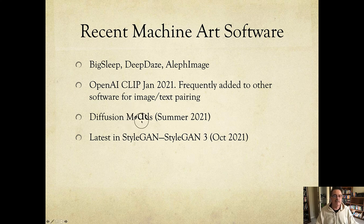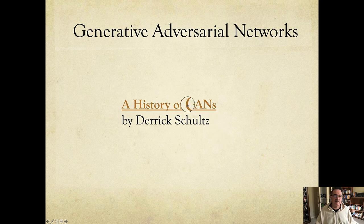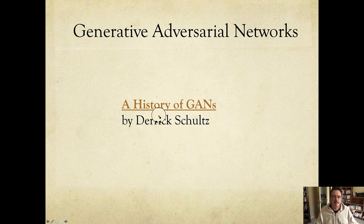Diffusion models are more recent and I really love the art that comes out of diffusion. StyleGAN3 is very new — it just came out last month. GANs are a family of different kinds of models; GAN stands for Generative Adversarial Network, where you have a generator and a discriminator as parts of the overall architecture. Derek does a great job explaining the history of GANs, how it started, and where we're going.